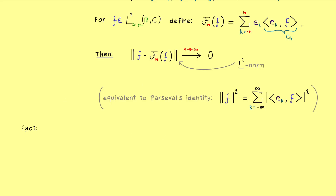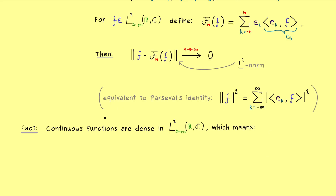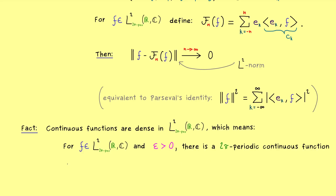Let's start by stating a fact which might be well known for the L2 space: the continuous functions are dense in the square integrable functions. This has the meaning that every L2 function can be approximated by continuous functions with respect to the L2 norm. More precisely, for an arbitrary L2 function f and arbitrary small epsilon, we find a continuous 2π-periodic function g such that the difference measured with the L2 norm is less than epsilon.